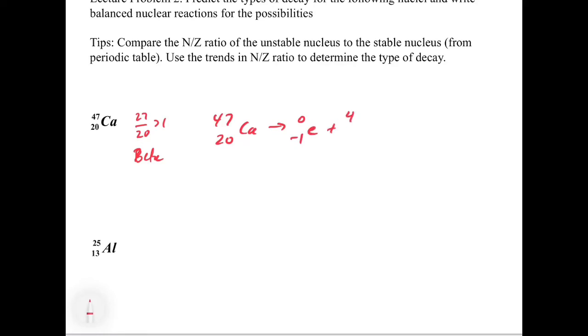But we have to have one more proton to make sure that the 21 plus a -1 gives us back the 20. If you look that up on the periodic table, that gives you scandium as the product. So this one's going to be beta, and it's going to be scandium.